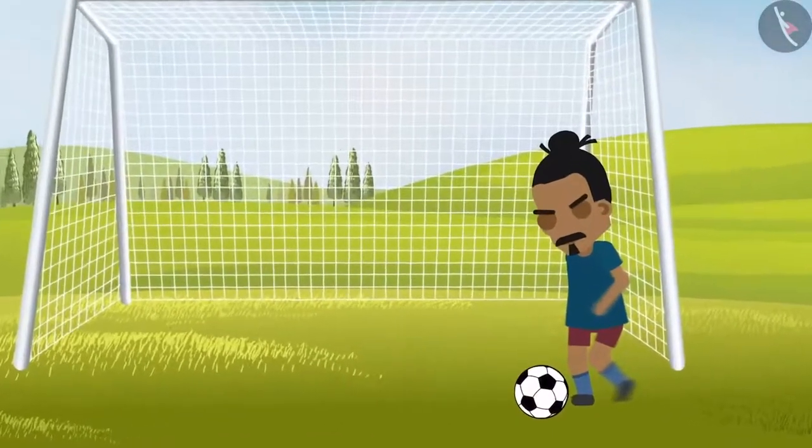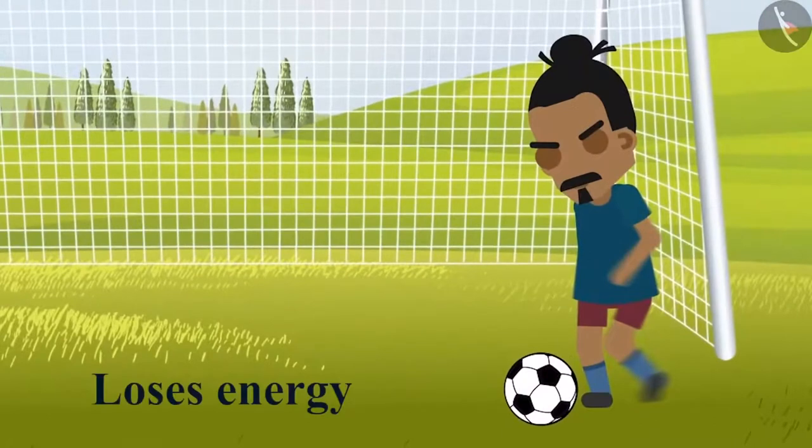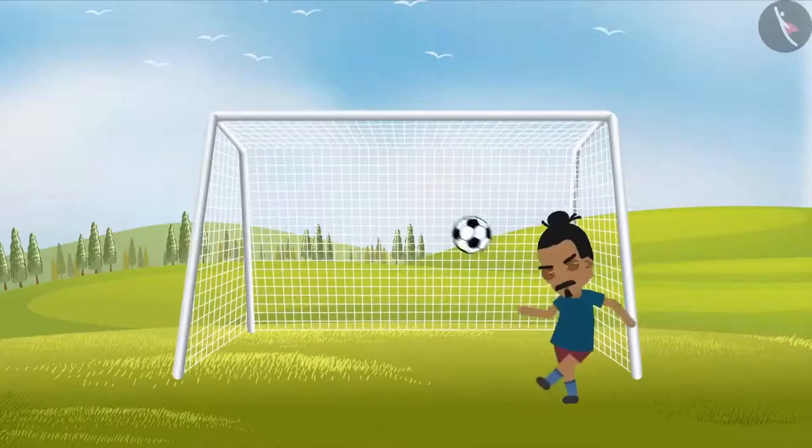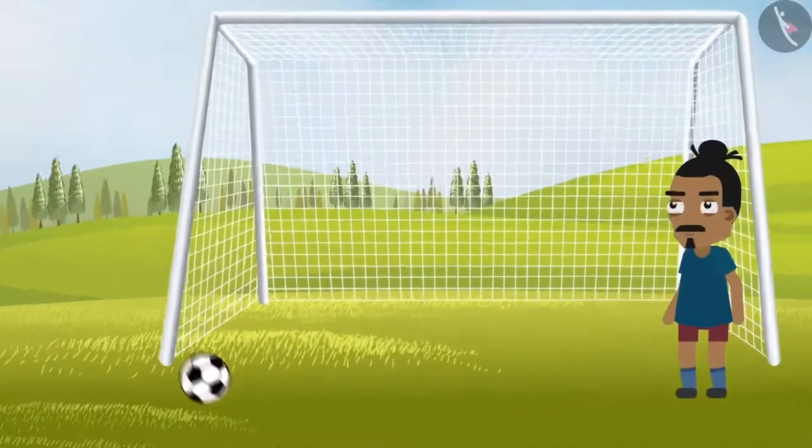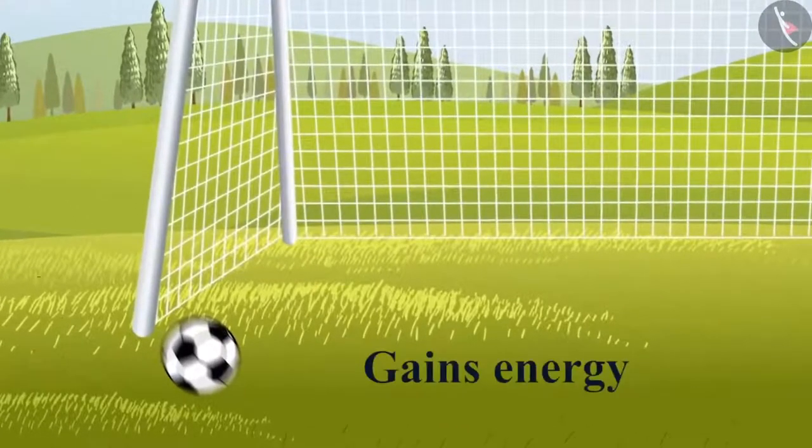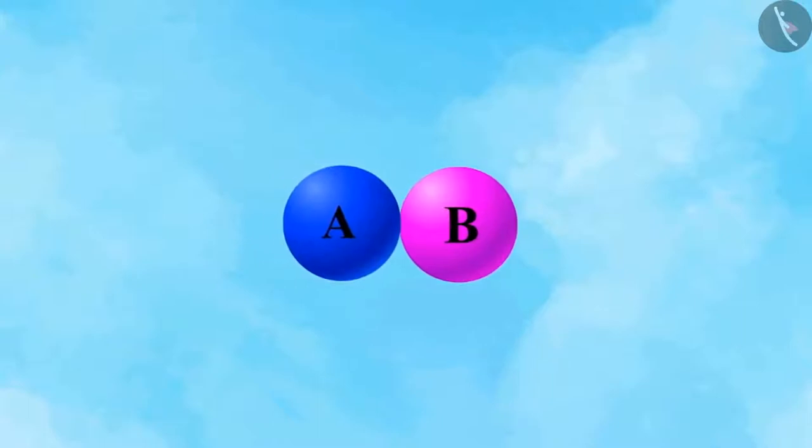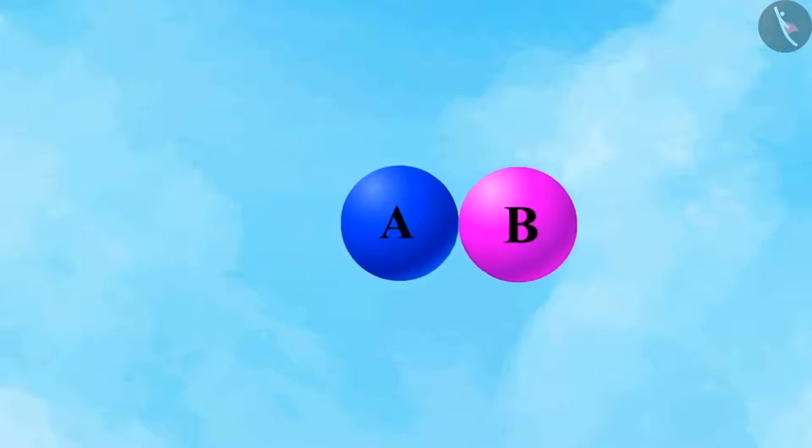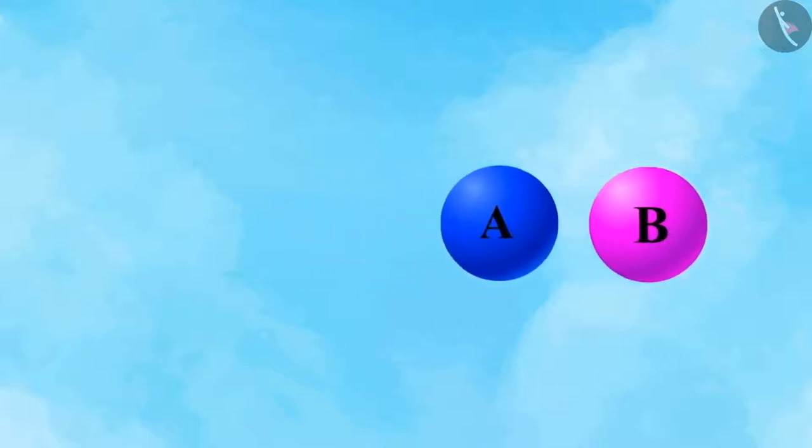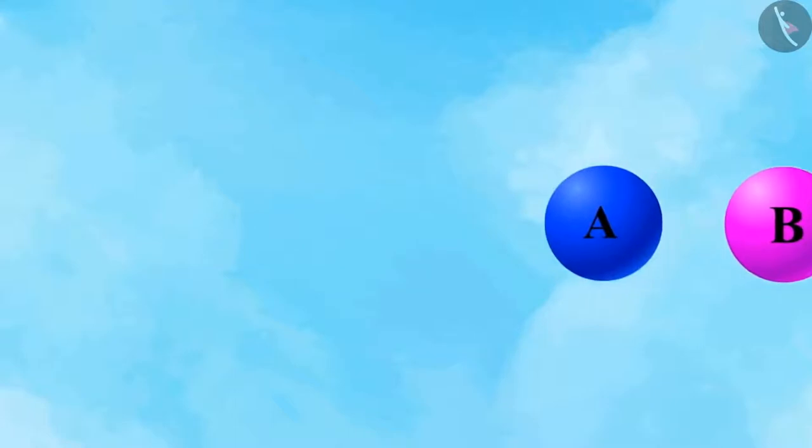The capacity of an object to do work is termed as energy. The object which does the work loses energy, whereas the object on which work is being done gains energy. Suppose a ball A exerts a force on another ball B. Ball A transfers its energy to ball B, then after receiving the energy, ball B possesses the capacity to do work.